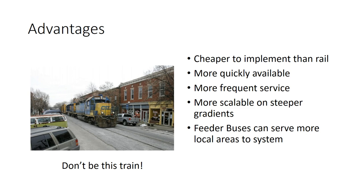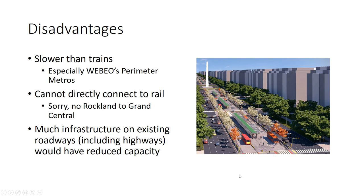It's also more scalable on steeper gradients. The route in this webio goes through a lot of mountains — if I tried to build a train line through them it would be underground most of the time. This is much cheaper and more interesting to ride; you'd be at the same level as a highway and not underground missing the world above. Finally, feeder buses can serve more local areas to the system. Buses coming from local street corners can get onto this busway and eventually drop passengers off right near their workplace at a new station.